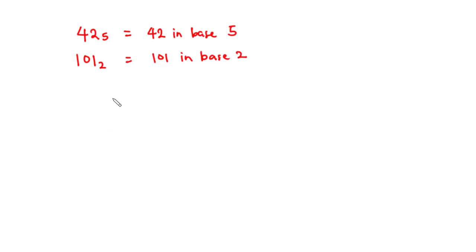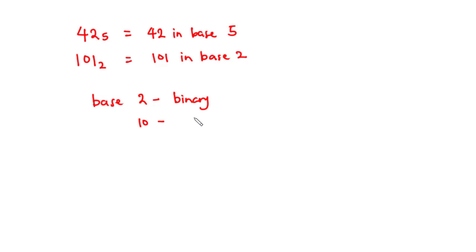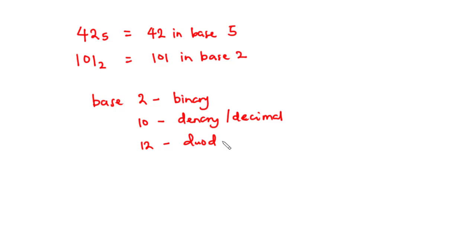The numeration system in base 2 is called a binary system. That in base 10 is called the denary system or decimal system. And that in base 12 is called the duodecimal system.